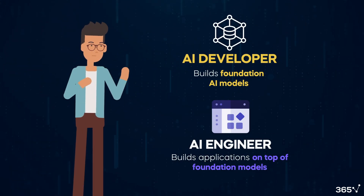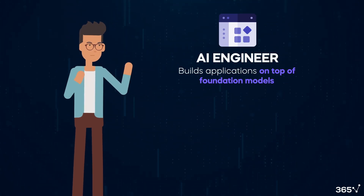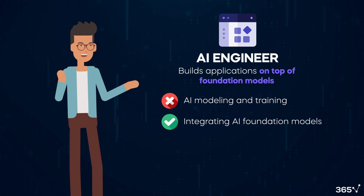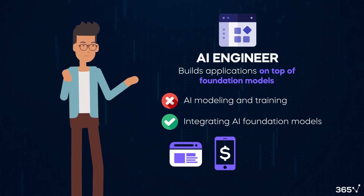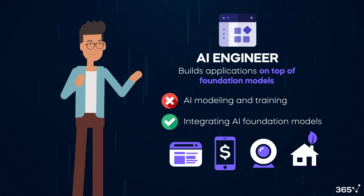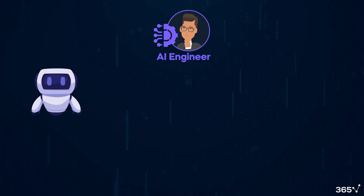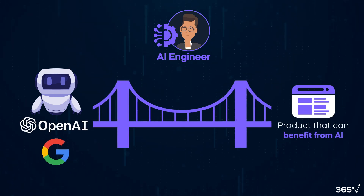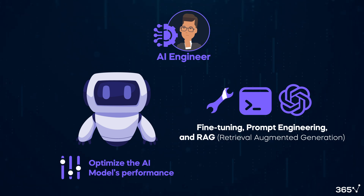An AI engineer builds AI-driven products on top of existing foundation models. This means they're not focused on AI modeling and training but on integrating AI foundation models with new or existing products such as websites, mobile applications, hardware systems like Internet of Things devices, and smart home systems. The AI engineer's main task is to build the bridge between foundation models developed by organizations like OpenAI and Google and a product that can benefit from AI. They also optimize the AI model's performance by performing various model adaptation techniques such as fine-tuning, prompt engineering, and RAG.